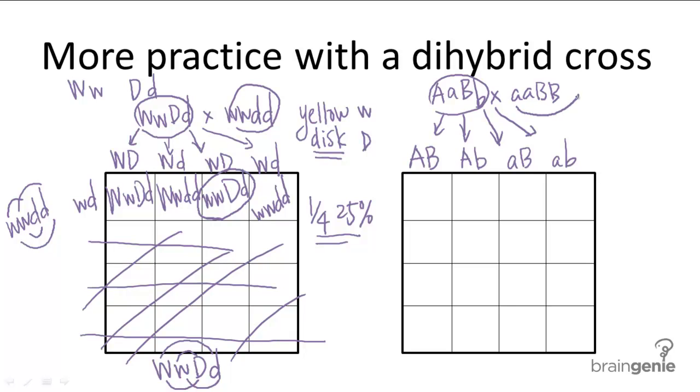For this individual, once again, you only have one type of gamete. And that is little a, big B, because that's the only combination that this has. So you can completely ignore this.